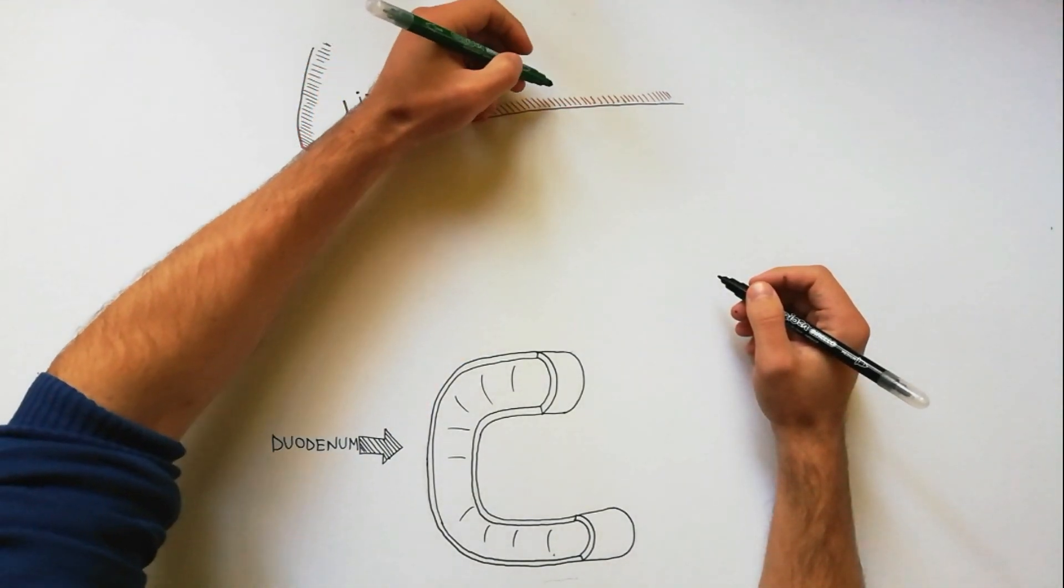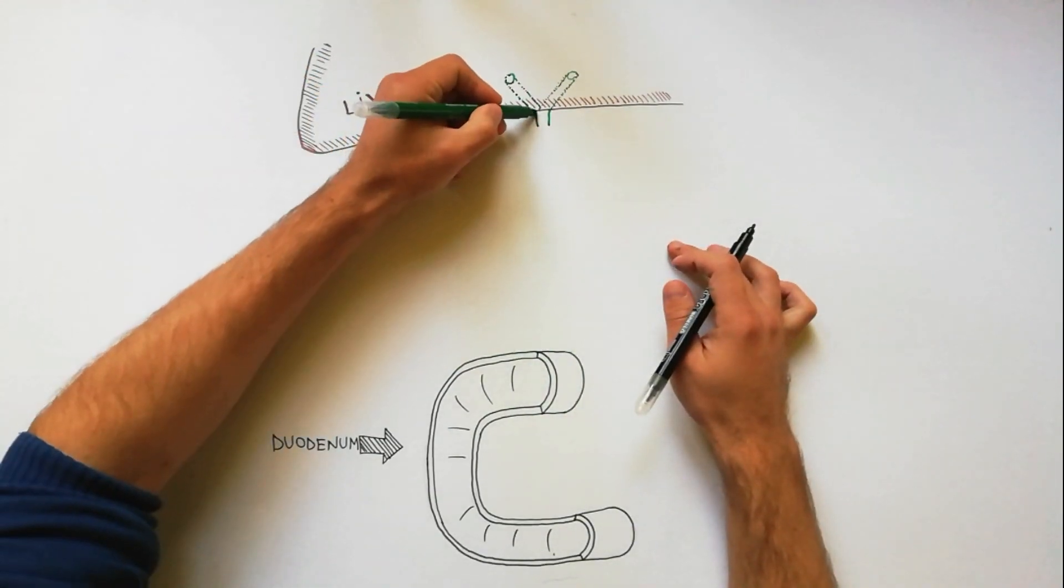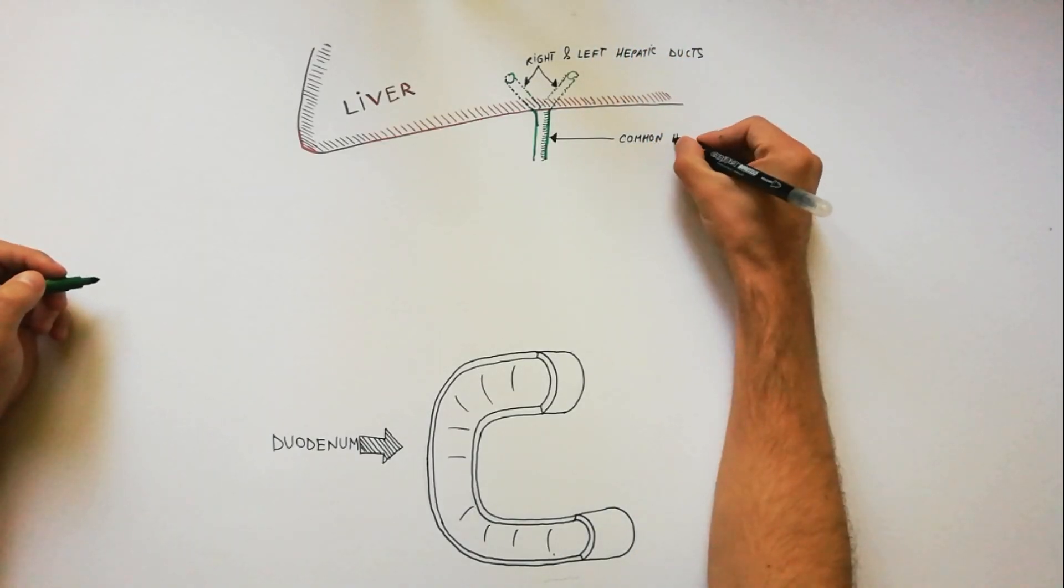It begins with the right and left hepatic ducts, which join together to form the common hepatic duct.